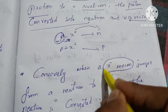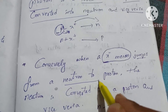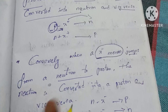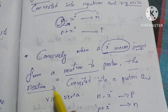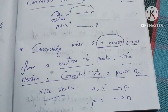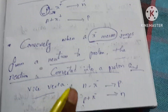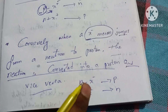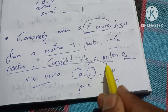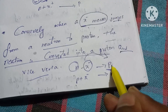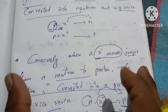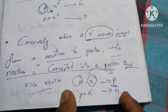A pi-minus meson jumps from a neutron to a proton. The neutron is converted into a proton and vice versa. That is: n gives pi-minus, and p plus pi-minus gives rise to n. This is the pi-minus meson exchange equation.